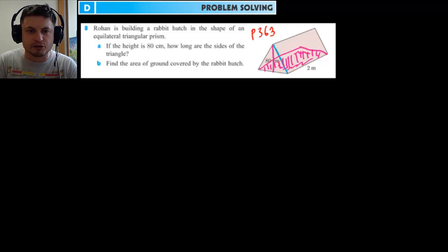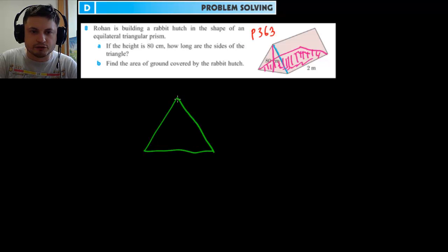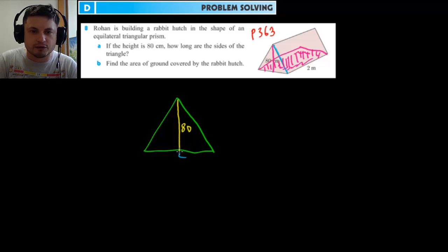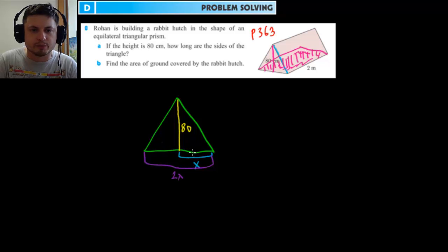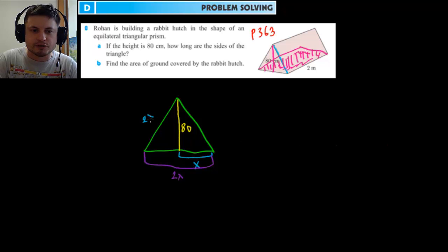First, let's look at this from two dimensions. We draw an equilateral triangle, and we know this part is 80 centimeters. We label this small part x, which means the whole base length is 2x — because it's divided into two equal parts. Since it's an equilateral triangle, the other side is 2x as well.